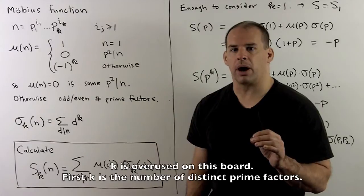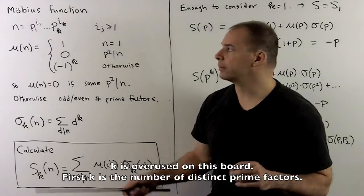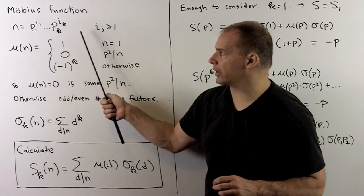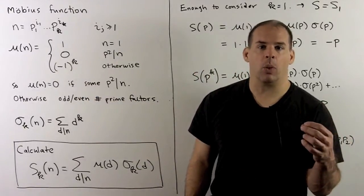Let's try the following number theory problem. Recall, we define the Mobius function as follows. Take a positive integer n, consider its prime factorization. Mu of n will be equal to 1 if n equals 1.